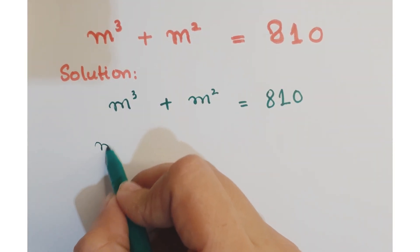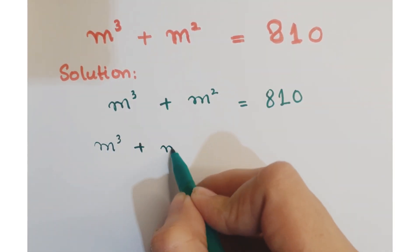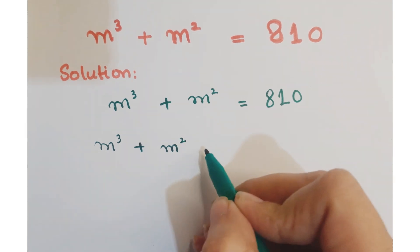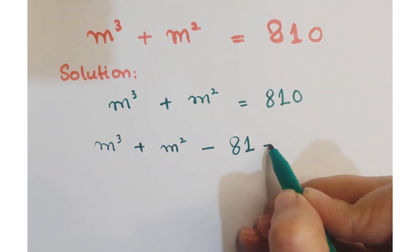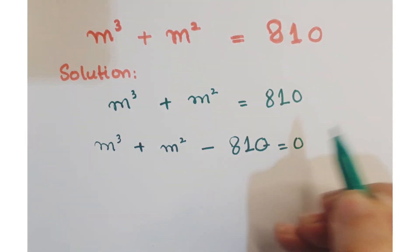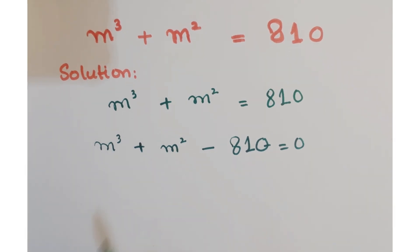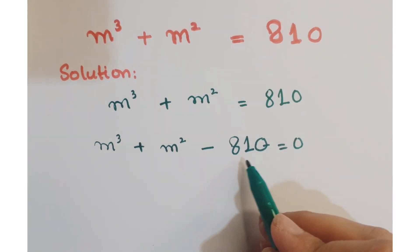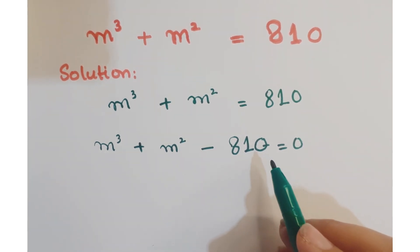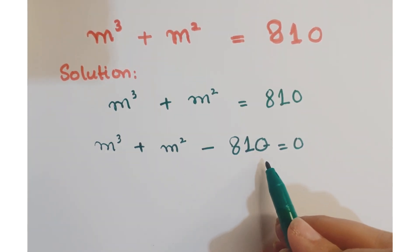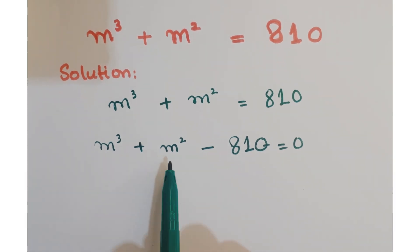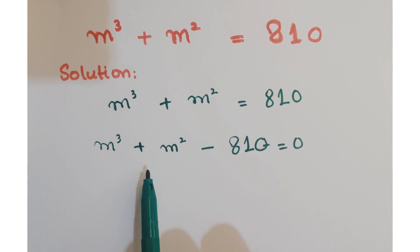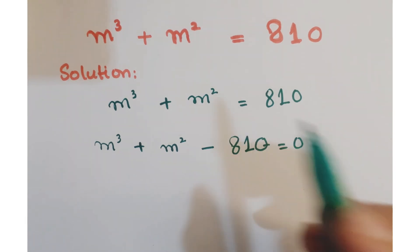Now, just bring this 810 on the left hand side. Look at this equation — this is a cubic term and this is a square term. So in order to resolve this cubic term and this square term, we have to split this 810 into two such numbers that one is a cube of a number and the other is a square of that same number, so that we can resolve or simplify that m³.